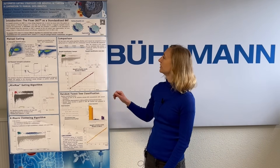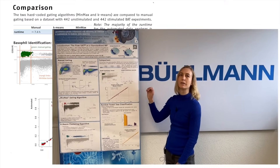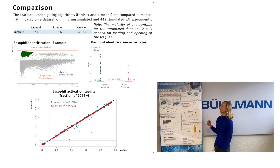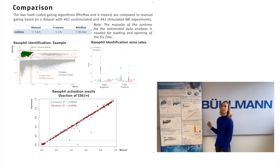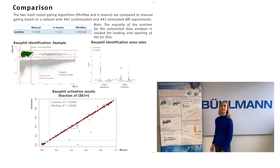When we compare these approaches to the manual data analysis, we can see that there are very low misclassification rates of basophils for the minimum-maximum approach and the K-means clustering approach, usually below 3% misclassification.